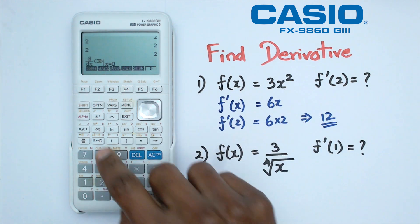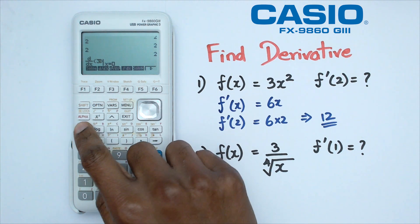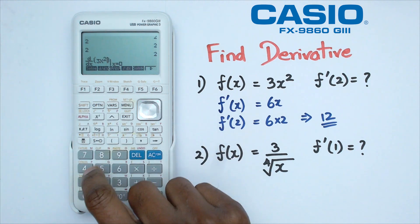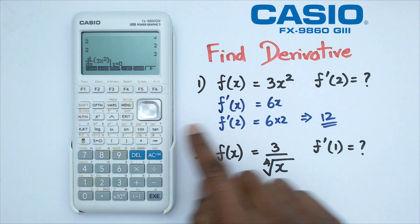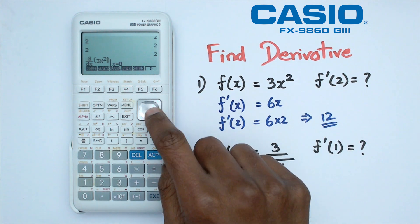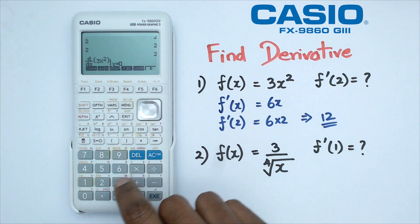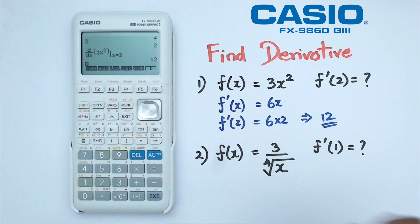So we're going to type in 3, the x we're going to use under the alpha, and we're going to use 3x² with the squared button there. Next, we want to find f dash of 2. So we're going to go into x equals 2. And then we're going to press equals. And there we go, we get 12.